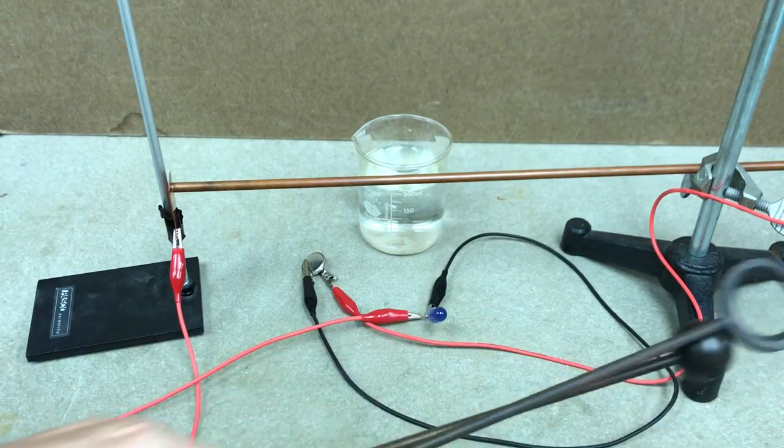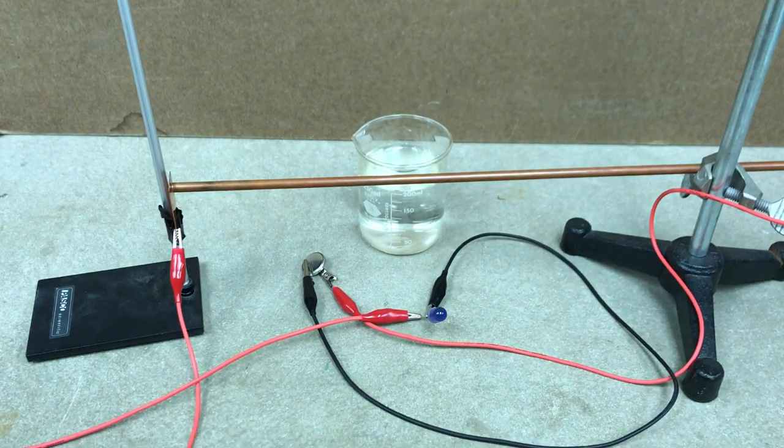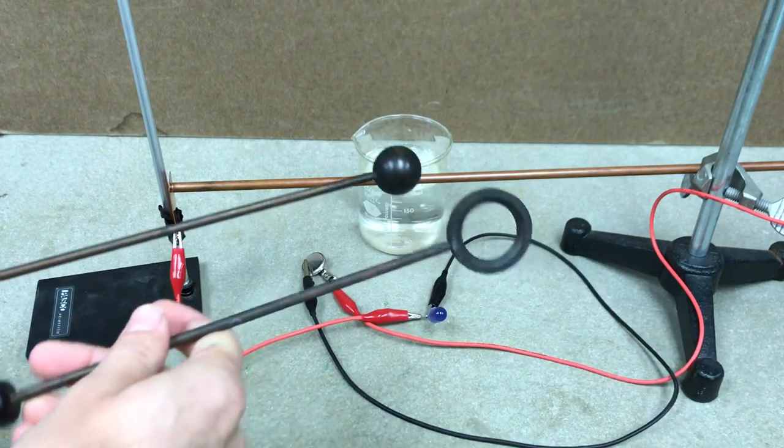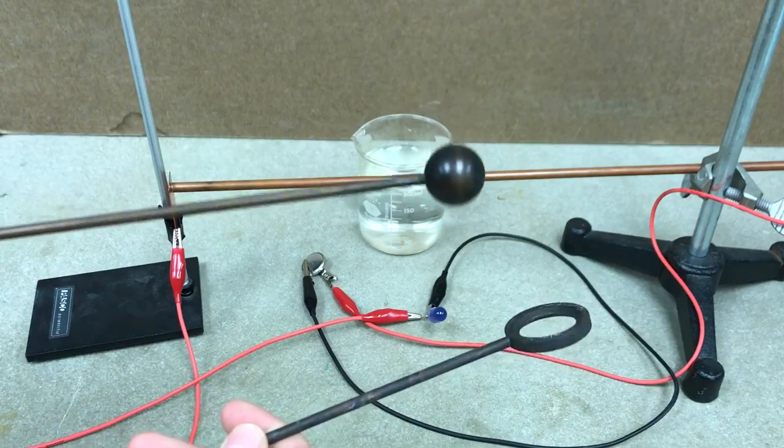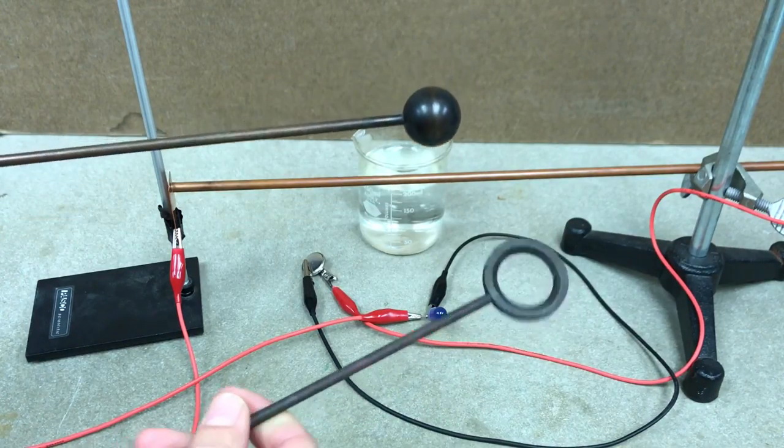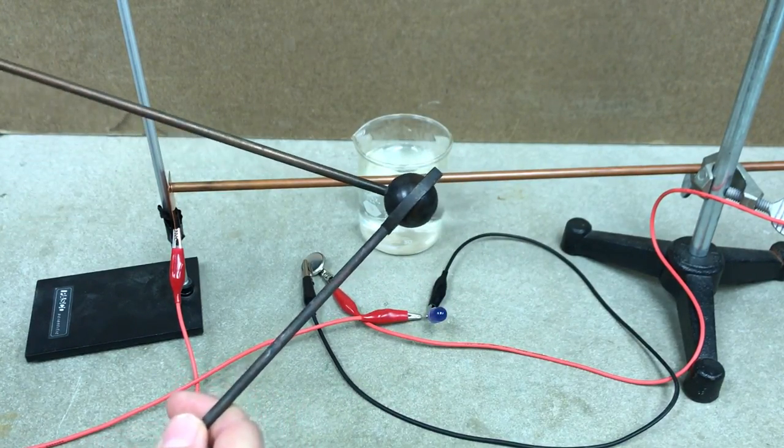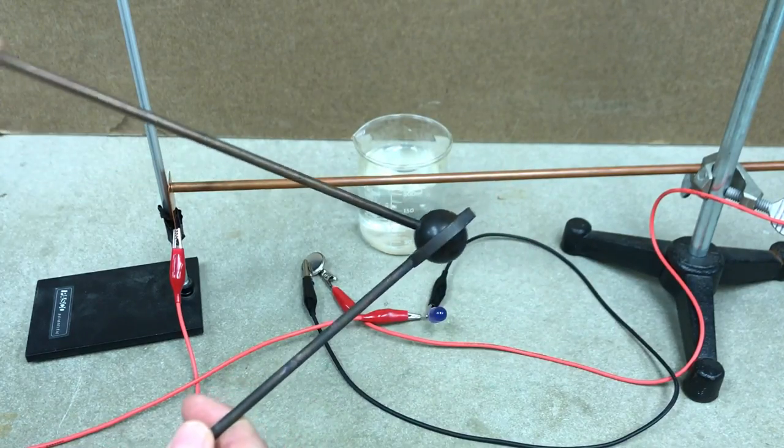I'm going to start off with a very classic demo. You may have seen this. This is actually not quite the same thing. So I have two objects, a metal ball and a ring, and they don't fit through. The normal ones should fit through, but these don't match.